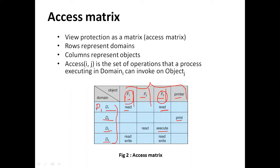A process in domain d1 can read f1 and read f3. If a process is executing in domain d2, then it can only access the printer and has access to no other objects. If the process is executing in domain d3, it can access f2 and f3 only — it can read f2 and execute f3. If a process is in domain d4, it can read and write f1 and read and write f3, but it cannot access f2 or the printer.